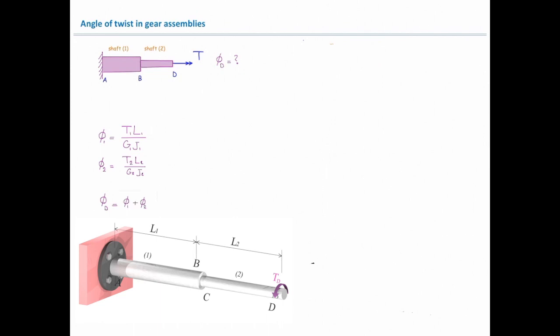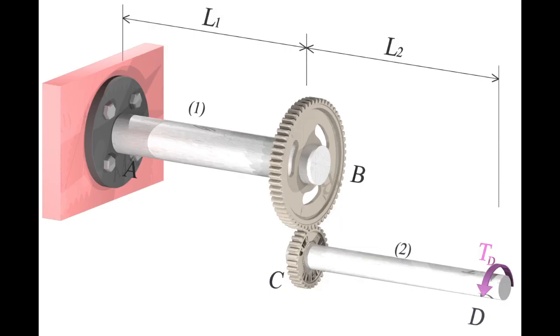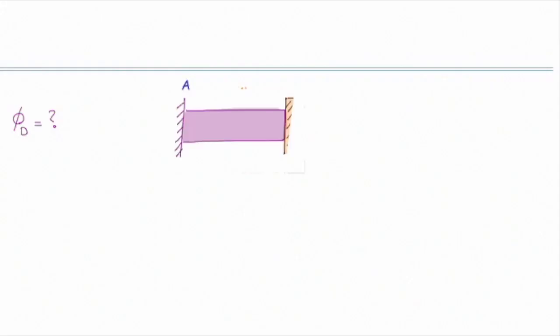Now let me consider another case. In this case, again, we have two elements. The rest are at the left, and at the right is subjected to a torque. So everything is similar to that, but these two elements are now connected by gears. We want to see how we can determine angle of twist at D. So let's take a look at that from side. We would see these two elements, gear B and gear C, are shown here.